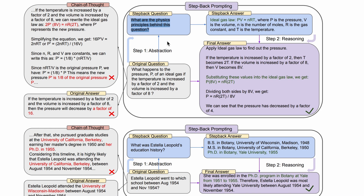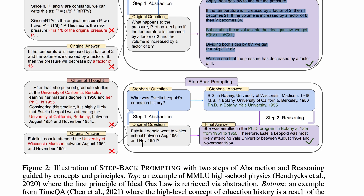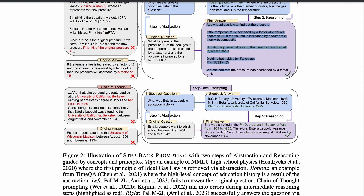Once you have the step back question ready, you use it as an abstraction-guided answer — you create a step back answer, and that is what is going to be used as reasoning to create the final answer. For example, if the original question is 'Estella Leopold went to which school between August 1954 and November 1954,' then you create a step back question: 'What was Estella Leopold's education history?' That creates a step back answer, and from that you do reasoning to create the final answer.